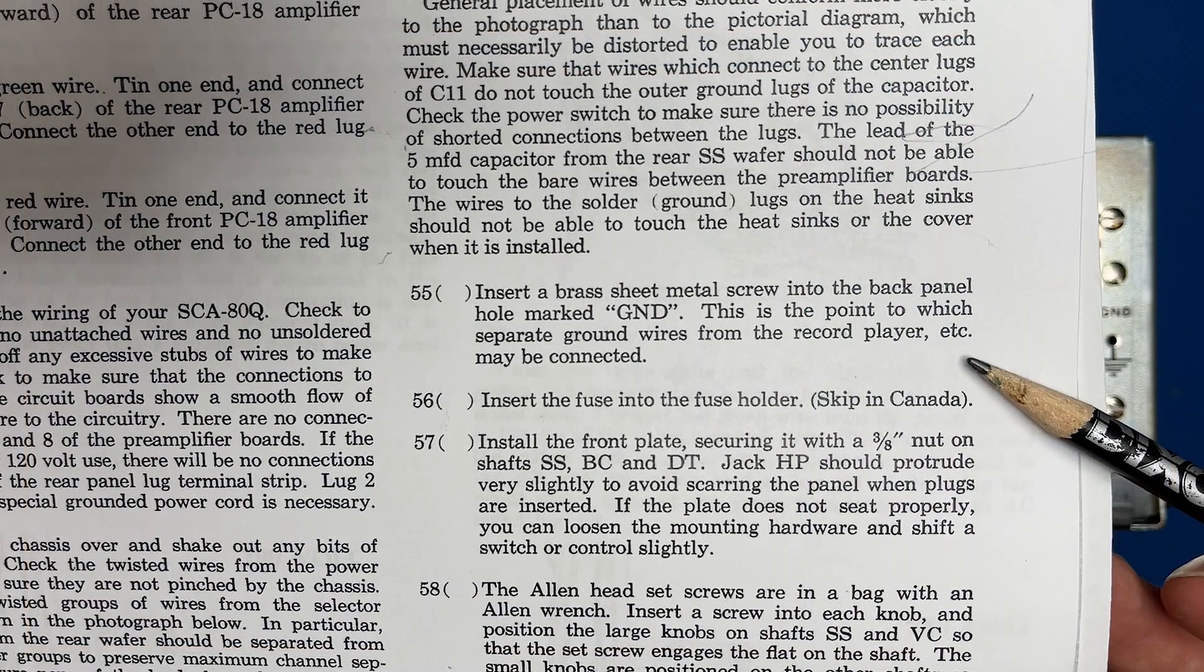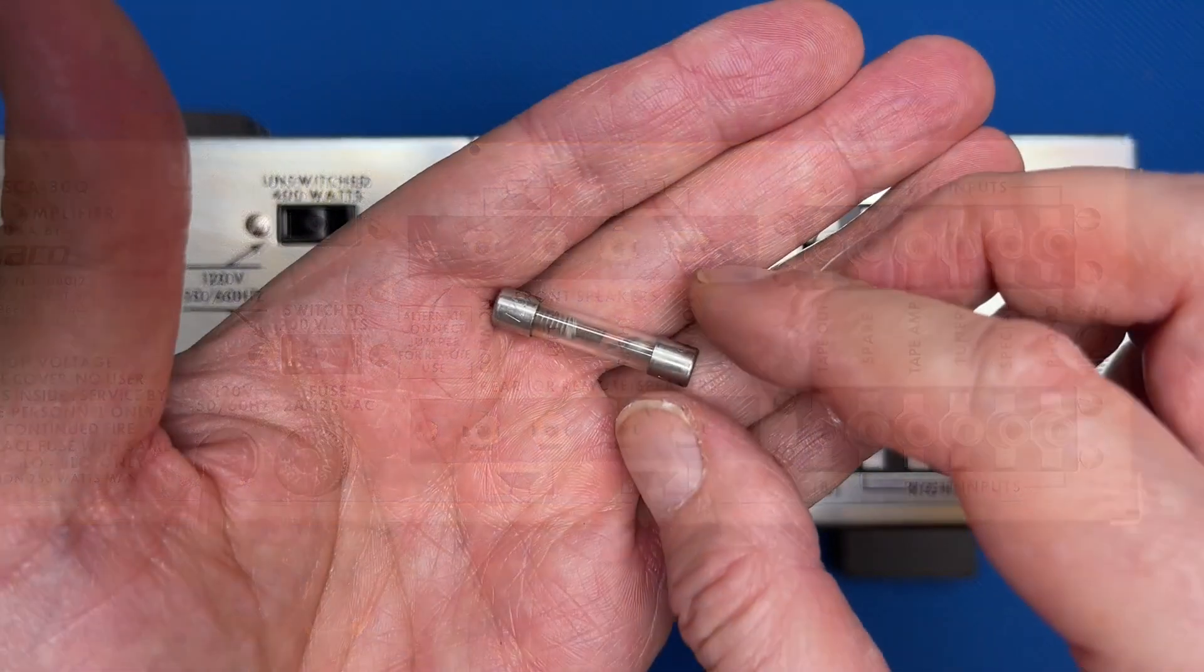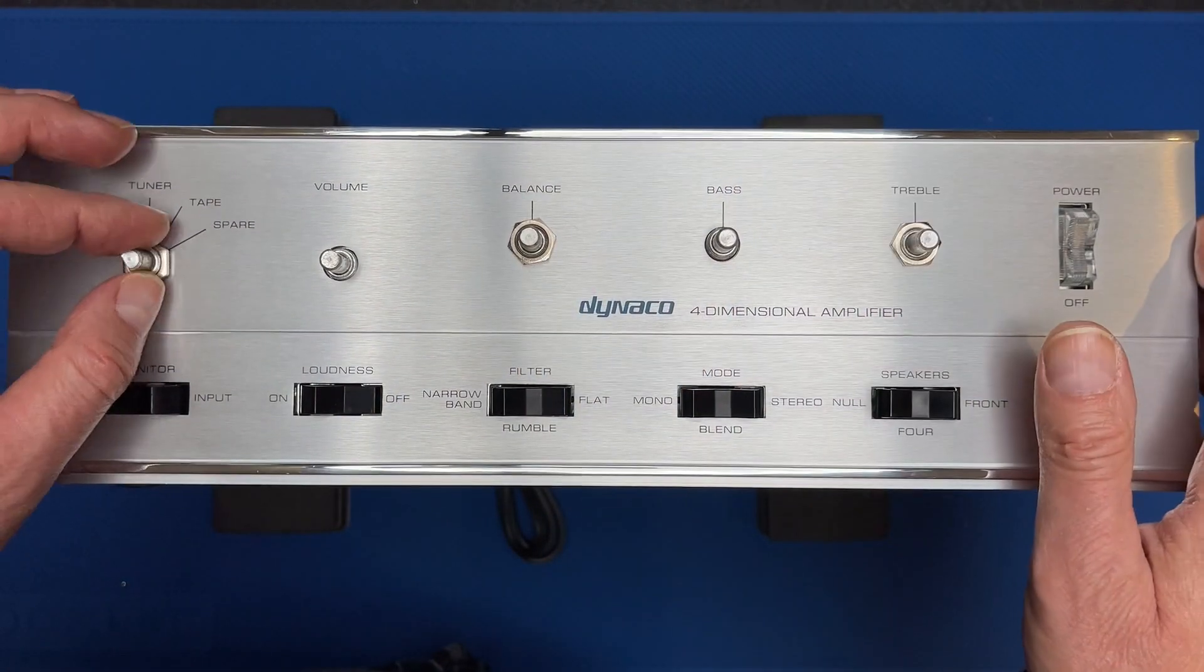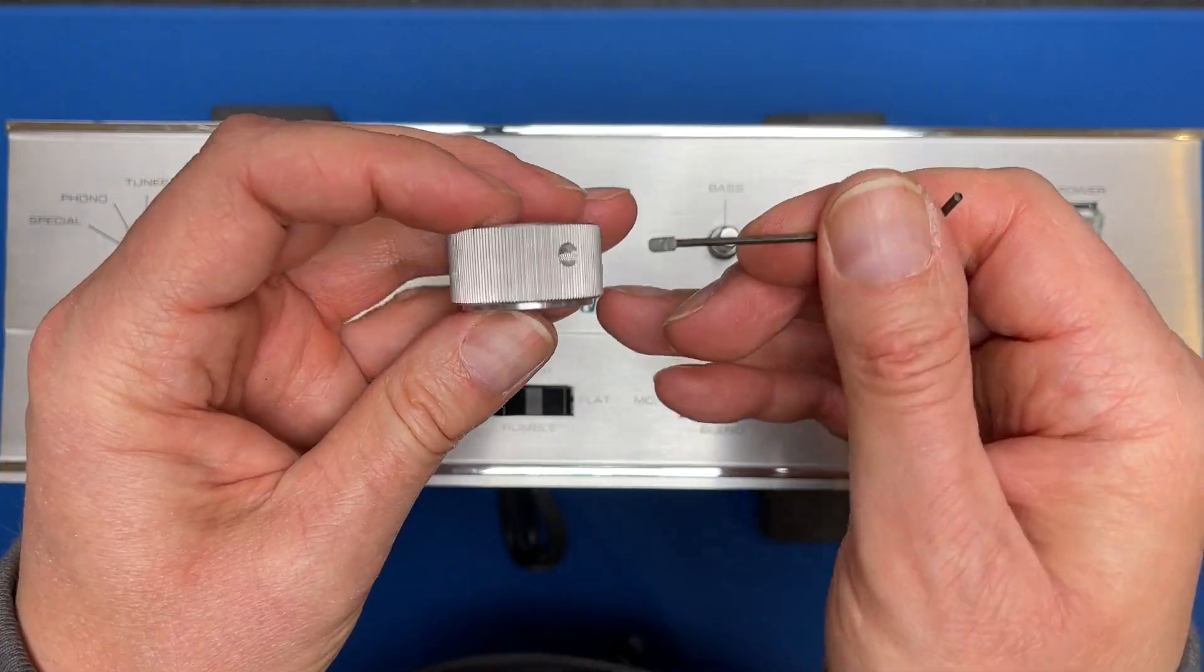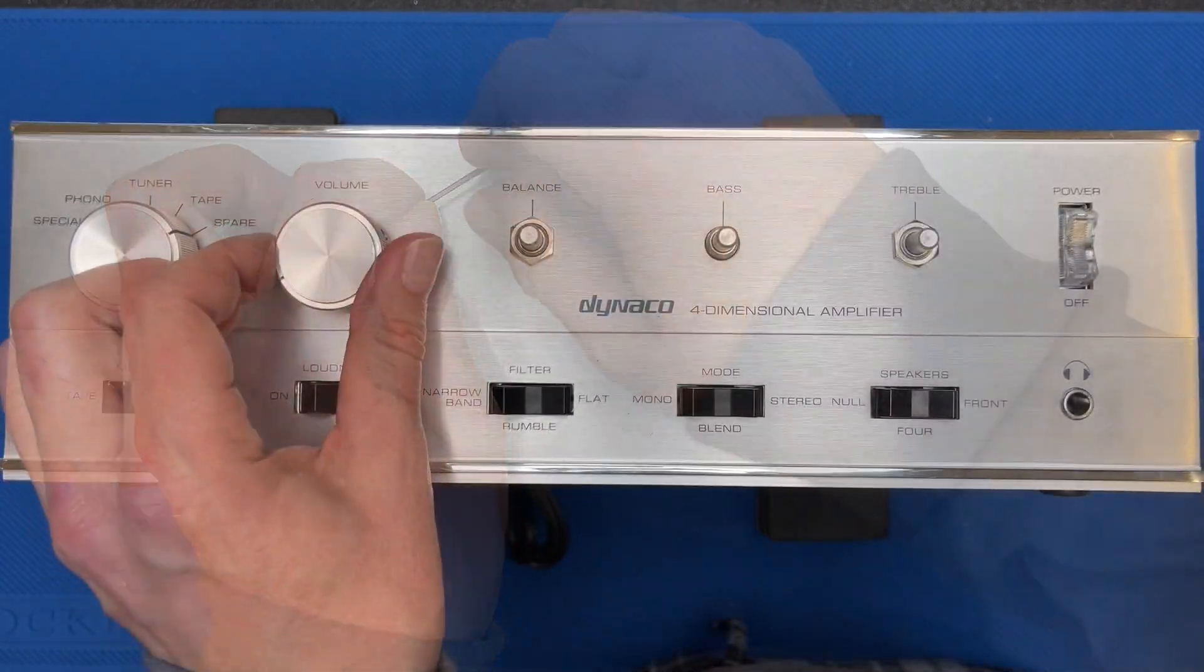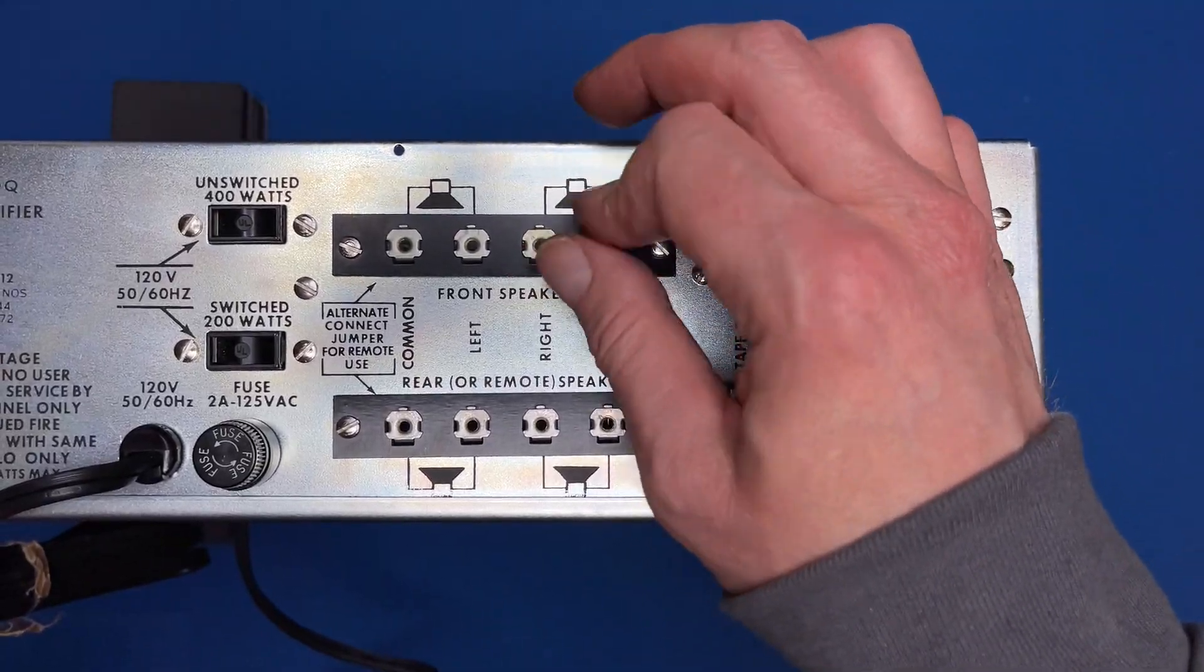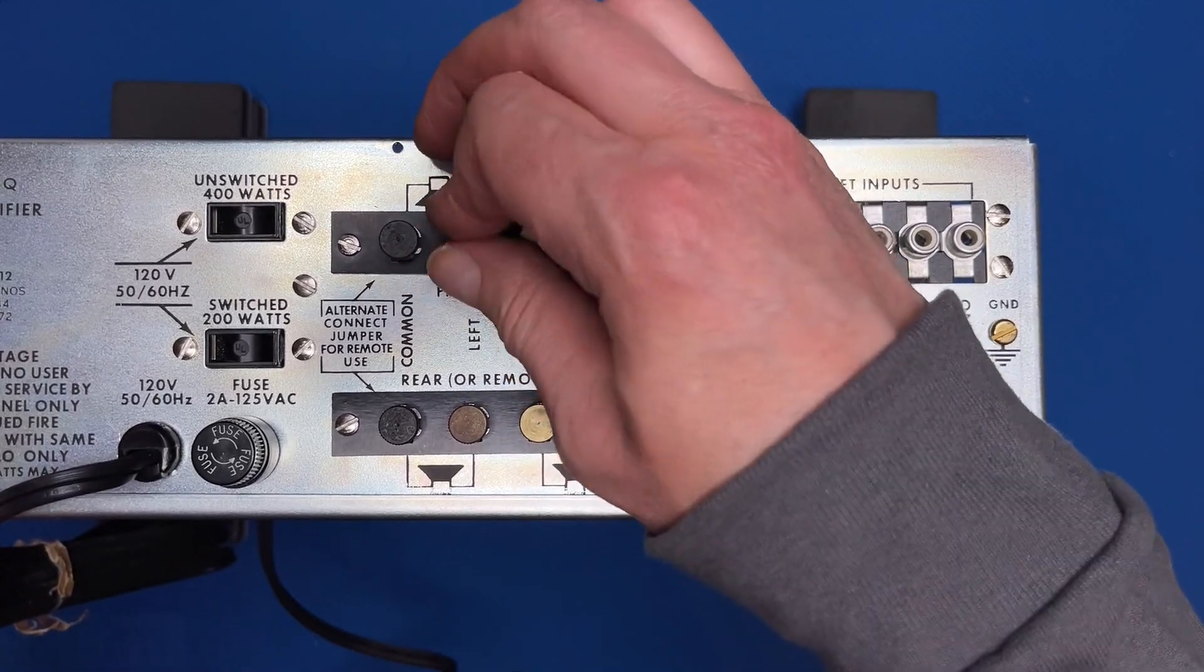Step 55: insert a brass sheet metal screw to the back panel to serve as the ground terminal. Step 55, done. Step 56: insert the fuse into the fuse holder. Done. Step 57: install the front plate. Step 57, done. Step 58: install the knobs. Step 59: install the thumb screws to the speaker terminal strips. Step 59, done.